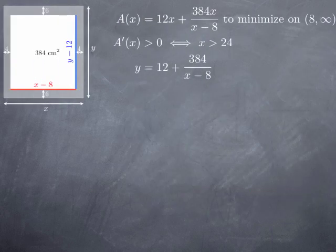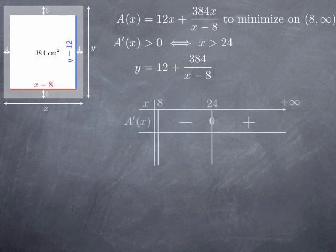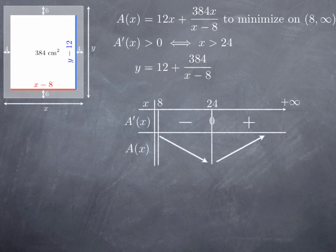So now we have our function A that we want to minimize on the open interval (8, infinity). And we found that the derivative is positive exactly when X is greater than 24. And once we found the optimal X, we can find Y because we have Y in terms of X. So what we have found is that the derivative is positive for X greater than 24 and negative for X less than 24. And of course greater than 8 because X less than 8 doesn't make sense. That means that the behavior of the function giving us the area is this way. It is decreasing from 8 to 24 and increasing from 24 to infinity. And therefore, we have the absolute minimum of the function A for X equals 24.